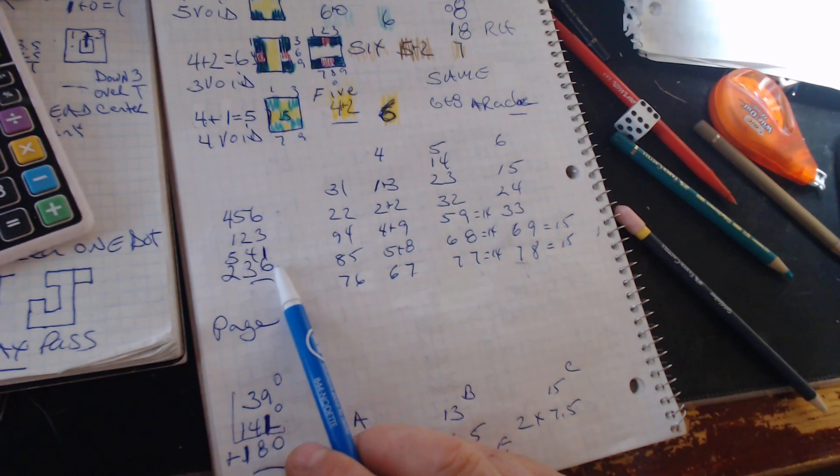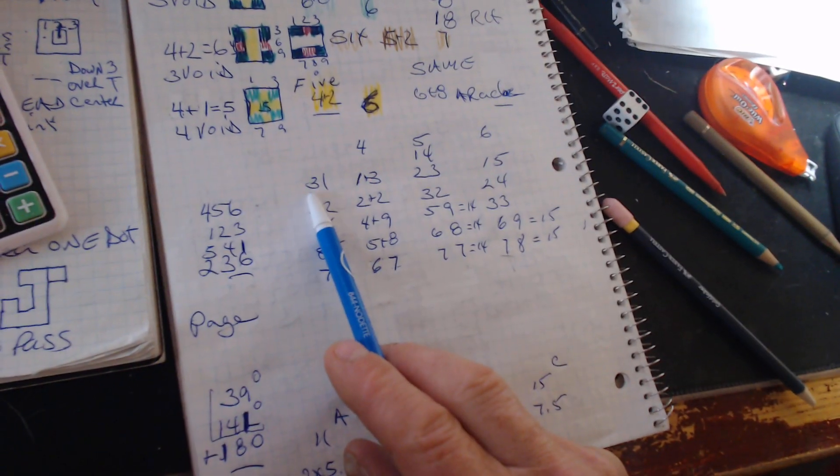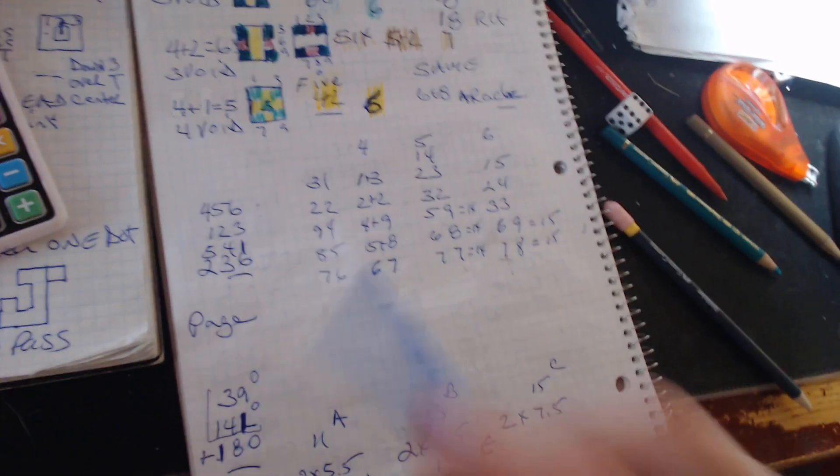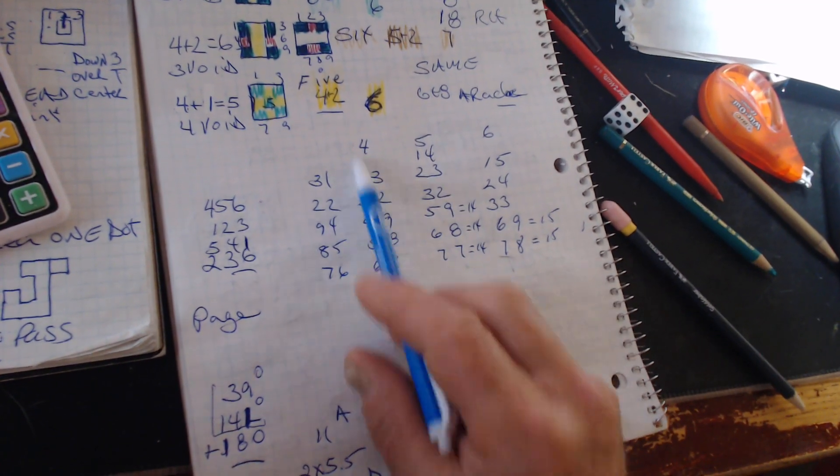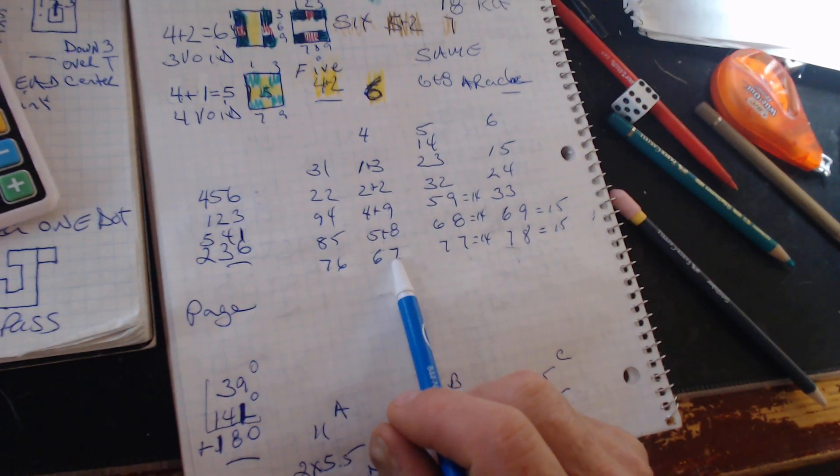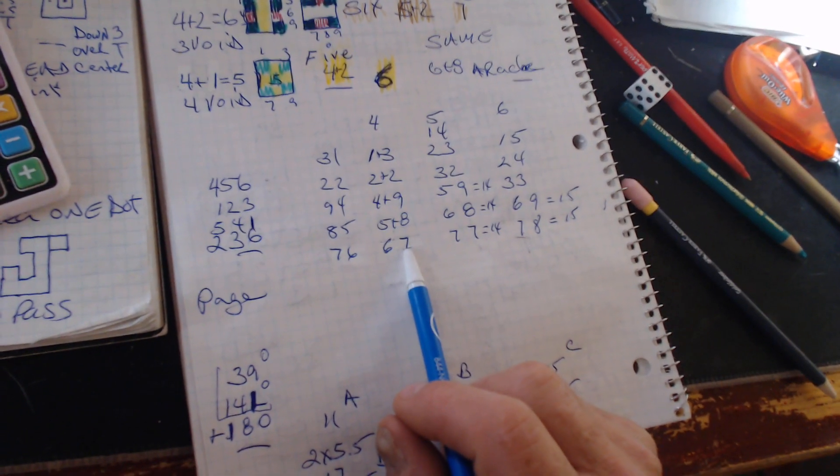Four, five, and six. 31, three and one. Two and two. Nine and four, 13. One and three is four. Five and eight, 13. One and three is four. Six and seven is 13. One and three is four.